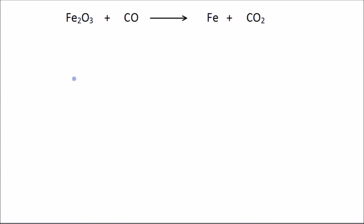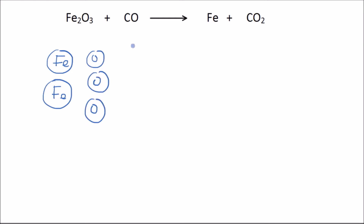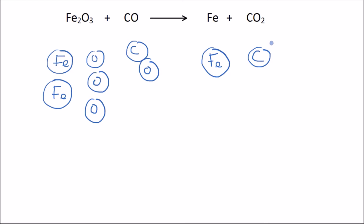How do we balance this? On the left-hand side, we have two iron atoms (Fe₂) and three oxygens in the iron oxide, plus one carbon and one oxygen in the carbon monoxide. On the right-hand side, we have only one iron atom and one carbon with two oxygens in the carbon dioxide. The carbons are okay — one on the left and one on the right — but the irons and oxygens are unbalanced.